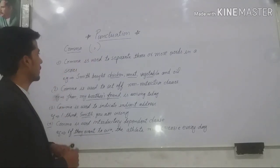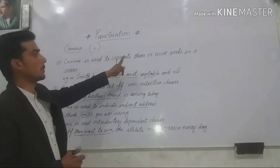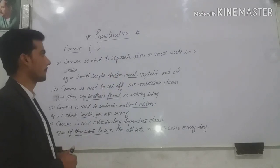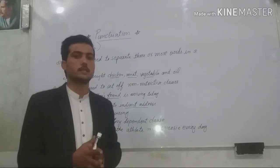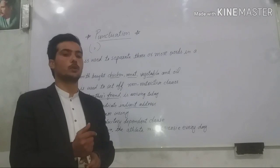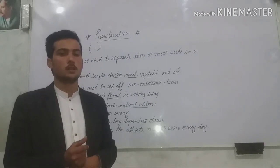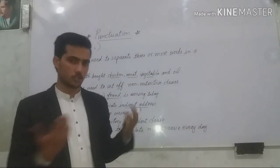So the first usage of comma is, comma is used to separate three or more words in a series. Comma can be used in simple words and a sentence where you want to just mention items. So that can be separated by comma, just look at this one.